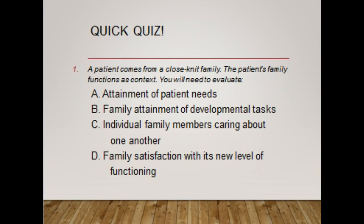Quiz: a patient comes from a close-knit family. The patient's family functions as context. You will need to evaluate: A) attainment of patient needs, B) family attainment of developmental tasks, C) individual family members caring about one another, or D) family satisfaction with a new level of functioning. The answer is A — attainment of the patient's needs.